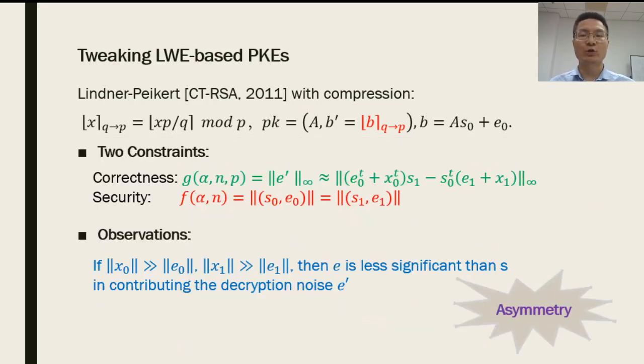Unlike the case without compression, after compressing the public key and ciphertexts, we find that the role of S and E in the decryption noise is asymmetric. In particular, if the extra part that is introduced by compression of the public key and ciphertexts is much larger than the E part, then the size of S is more significant than the size of E in the decryption noise e'. In other words, reducing the size of S will significantly reduce the decryption noise, but reducing or increasing the size of E will not change the decryption noise too much. This feature inspires us to reduce the size of S as much as possible for smaller decryption noise, and increase the size of E for maintaining the security.